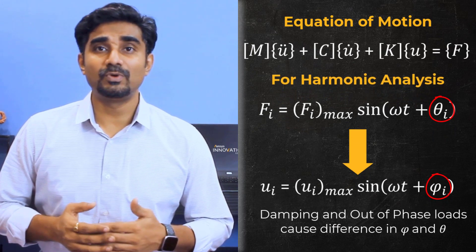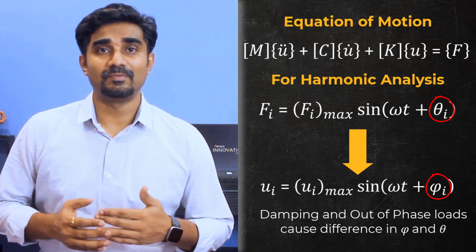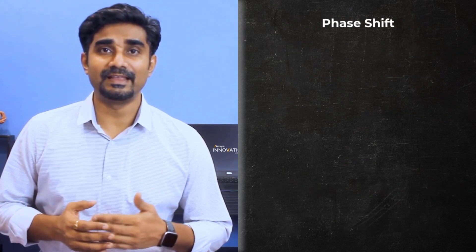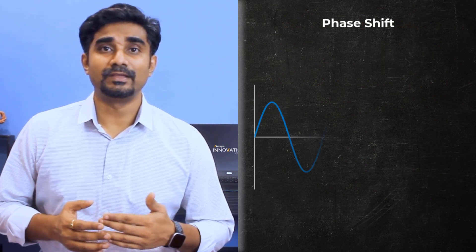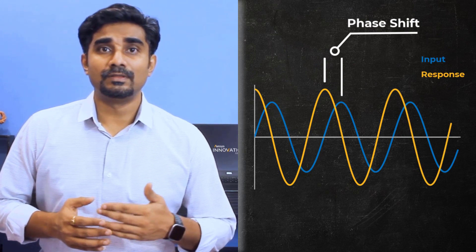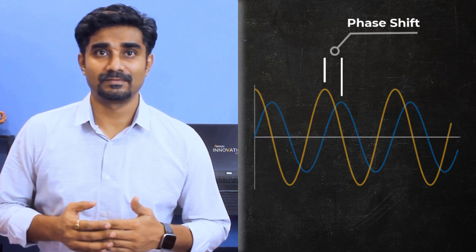The different input and output phase angles can be caused by out-of-phase loads or damping added to the system. We call the difference between phi and theta as the phase shift showing how much the input waveform is shifted compared to the response waveform of the structure. To summarize, the input and the output of harmonic analysis are both sinusoidal acting at the same excitation frequency. What we are trying to calculate is the amplitude of the response and the phase angle.